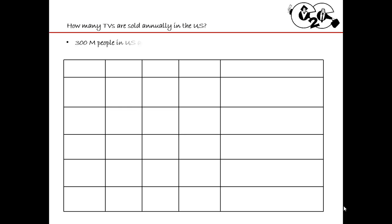So because of that, here's the upfront assumption I'm going to make. There are 300 million people in the U.S. — not 320 like I usually use, but 300 million. I'm going to say there's an average of three people per household, meaning 300 divided by three gives me 100 million households in the U.S. I'm also going to say that the households are evenly distributed across the U.S. I know this is completely false, but it'll make your math easier and it's just an assumption.